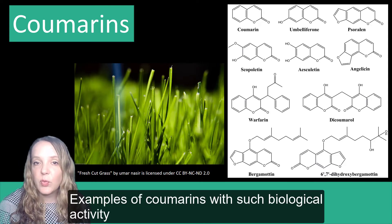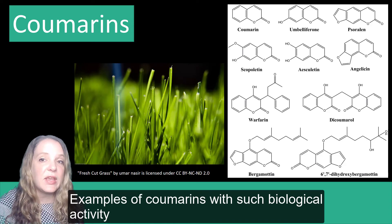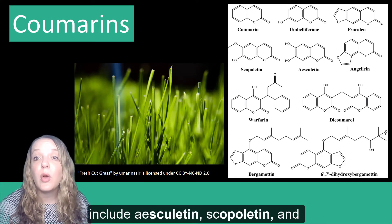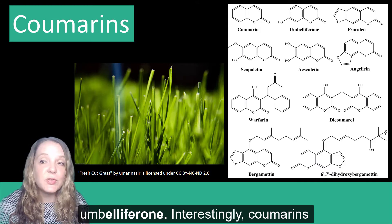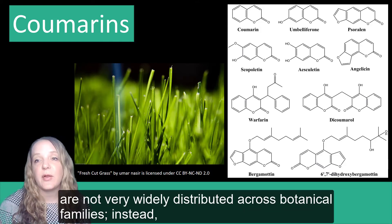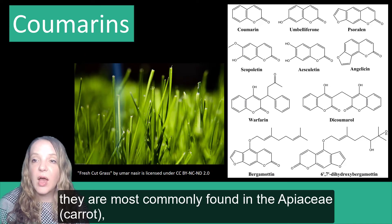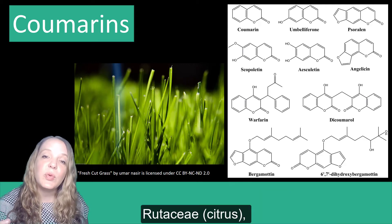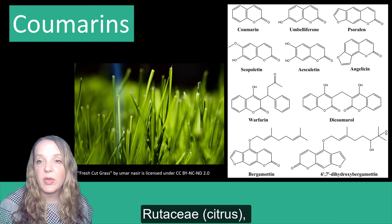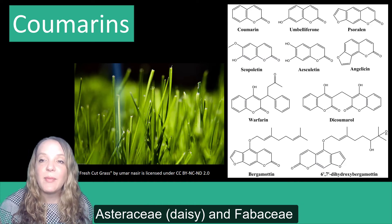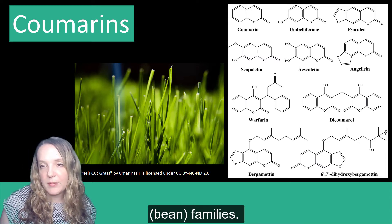Examples of coumarins with such biological activity include esculetin, scopoletin, and umbelliferone. Interestingly, coumarins are not widely distributed across botanical families. Instead, they are most commonly found in the Apiaceae or carrot family, the Rutaceae or citrus family, the Asteraceae or daisy family, and the Fabaceae or bean family.